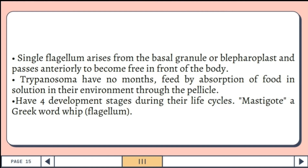They have four developmental stages during their life cycles. The term mastigote is a Greek word for whip, referring to their flagellum.